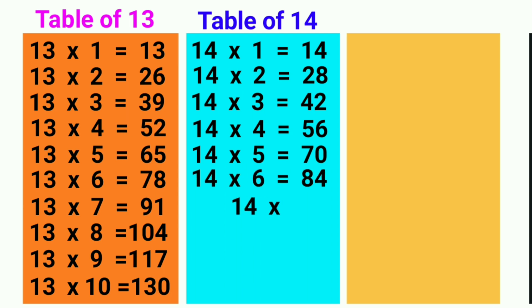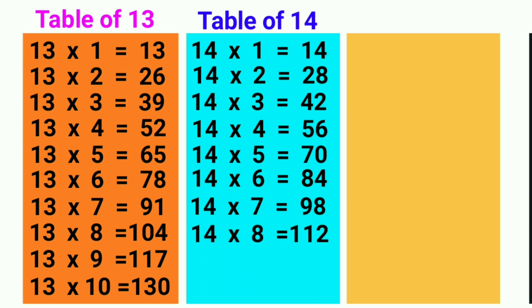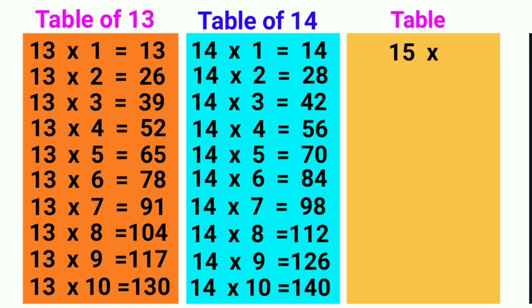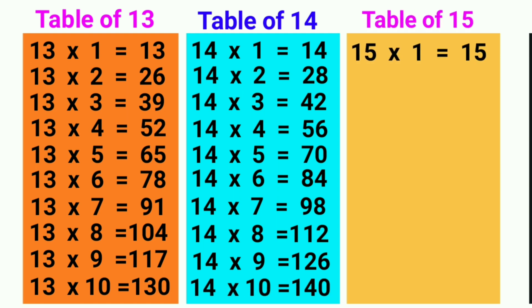14 sevens are 98, 14 eights are 112, 14 nines are 126, 14 tens are 140. 15 ones are 15, 15 twos are 30,